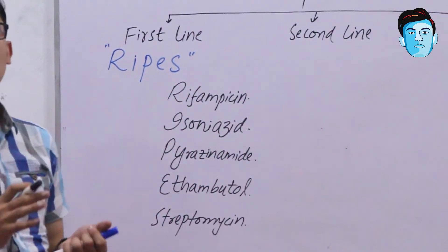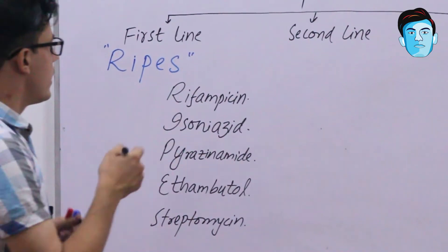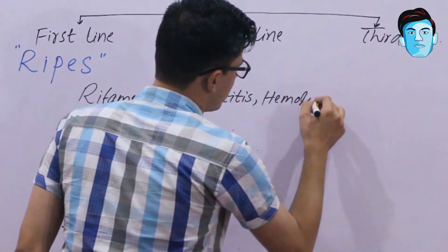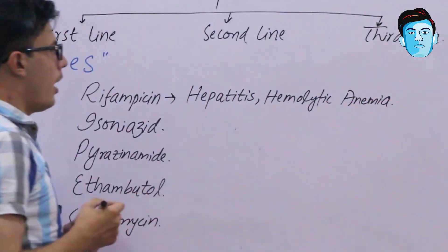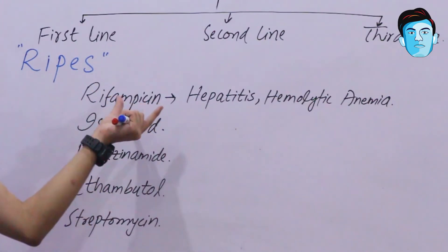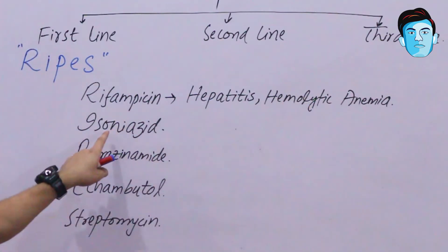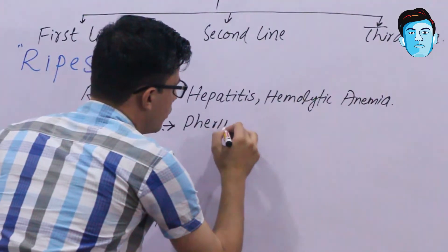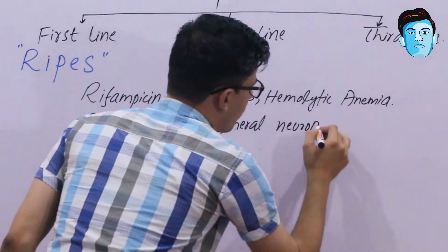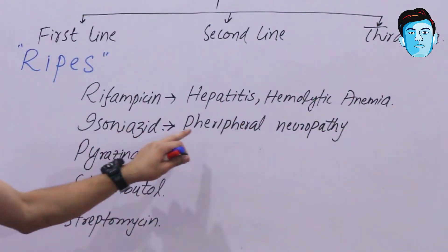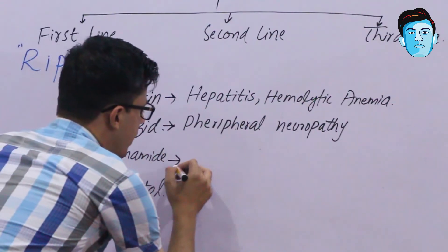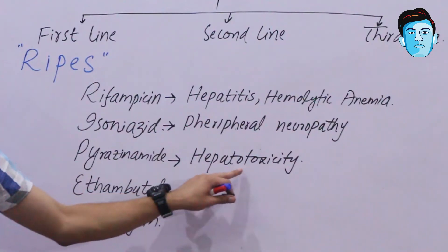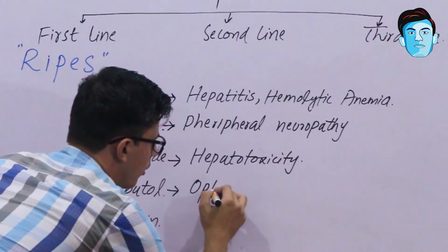The main important side effect of Rifampicin is hepatitis, and it may also lead to hemolytic anemia. The main side effect of Isoniazid is peripheral neuropathy. The main side effect of Pyrazinamide is hepatotoxicity.